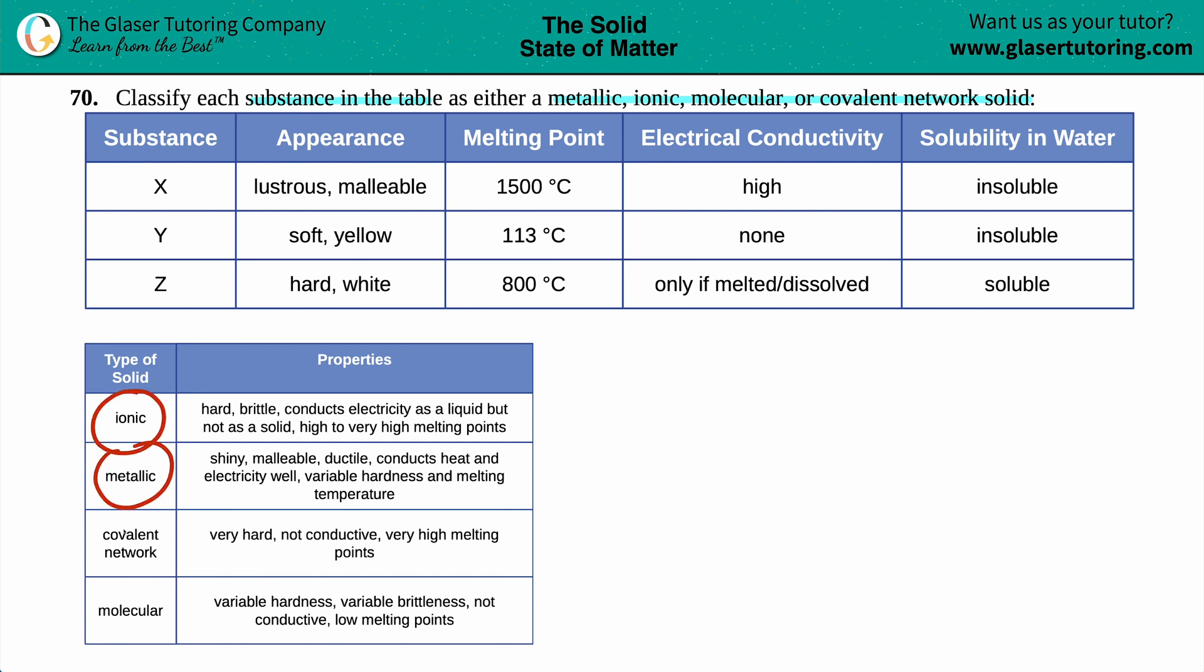Ionic, metallic, covalent network, and molecular. The top two, ionic and metallic, deal with metals. And the bottom two, covalent network and molecular, they deal with non-metals.